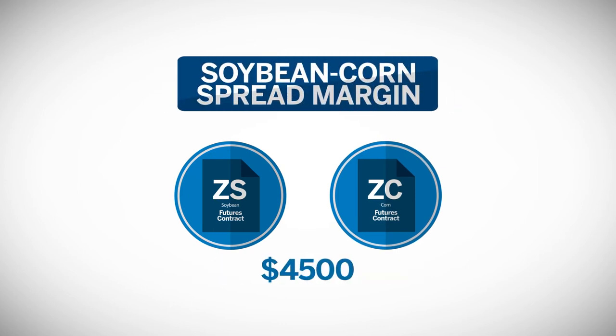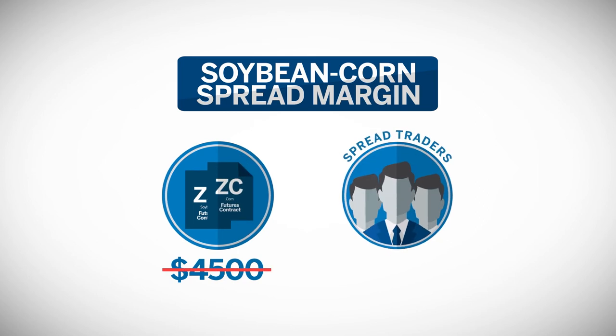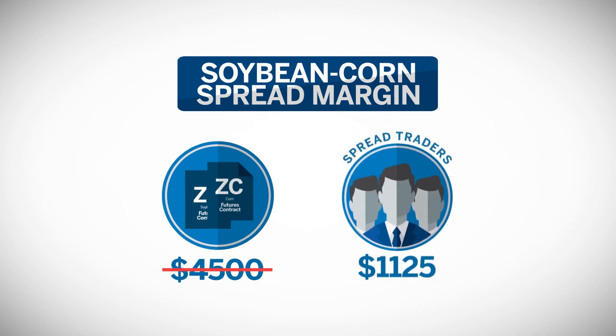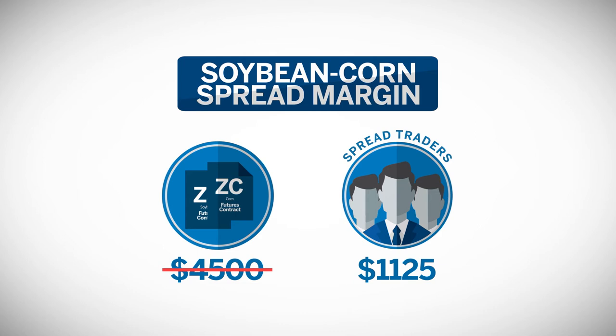Rather than posting $4,500 to trade both futures contracts, the soybean-corn spread traders actually received a 75% margin credit. In other words, the initial margin was $1,125 to reflect the lower risk in spreading the two contracts as opposed to trading each of them outright.